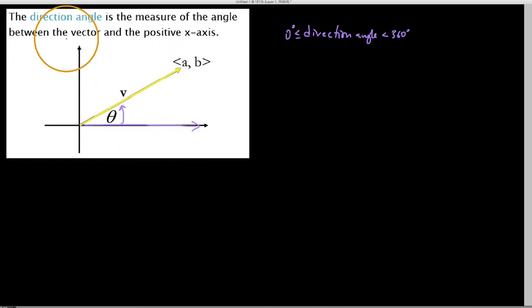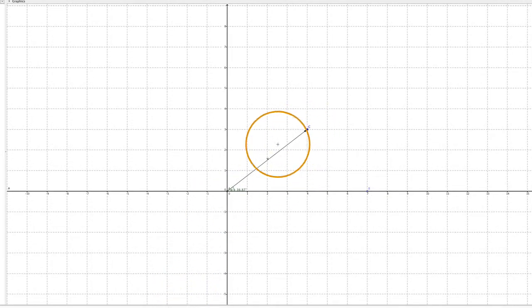So essentially the further around this goes, like let's say I had a vector that terminated over here in the second quadrant, its direction angle would be some angle between 90 degrees and 180 degrees. So in general, we say that the direction angle, I just popped over to that GeoGebra right here, and I've already cast a vector here that's in standard position. And you can see that it has some direction angle of 36.87 degrees.